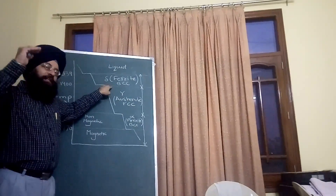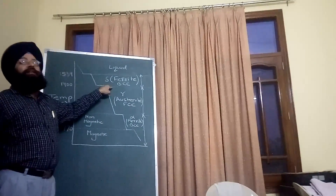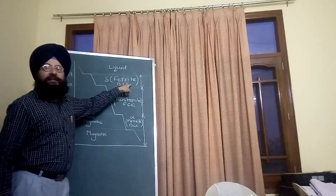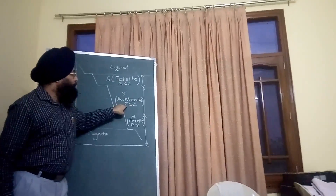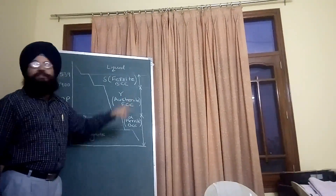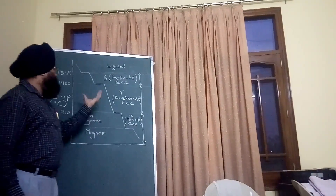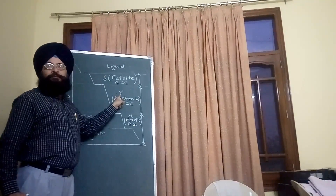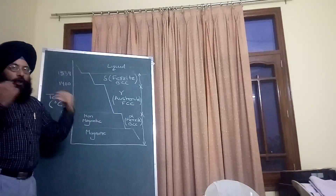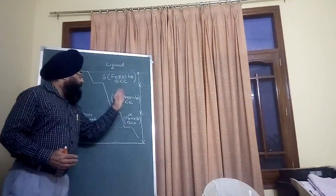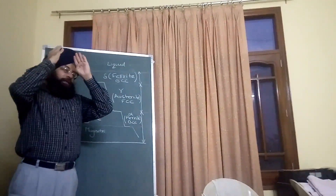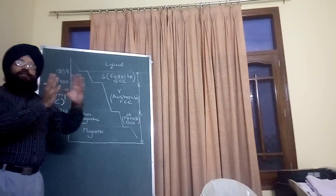Once the temperature is cooled below 1400 degrees centigrade, the structure changes from BCC to face-centered cubic structure, known as FCC. At this point, the iron is called gamma iron, or austenite. The gamma or austenite phase is a key distinction between steels and cast irons.